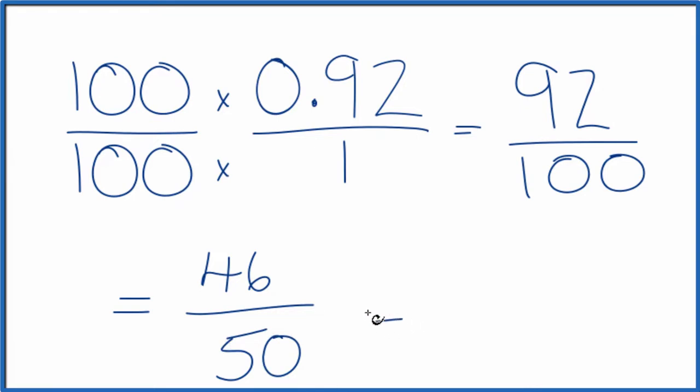And these are even numbers. Let's divide them by 2 again. 46 divided by 2 is 23. 50 divided by 2, that's 25.